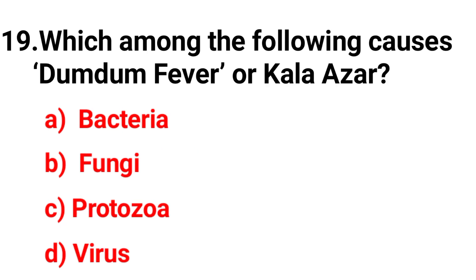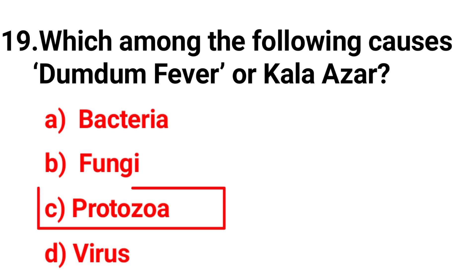Question 19. Which of the following causes disease — is it Protozoa or another option? The correct answer is Option C, Protozoa.